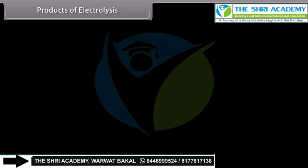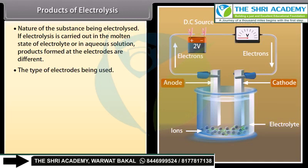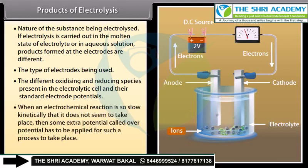Products of electrolysis depend mainly upon the following factors: the nature of the substance being electrolyzed — if electrolysis is carried out in the molten state or in aqueous solution, products formed at the electrodes are different; the type of electrodes being used — if the electrode is inert it does not take part in the reaction, or if the electrode is reactive it takes part in the electrode reaction; and the different oxidizing and reducing species present in the electrolytic cell and their standard electrode potentials.